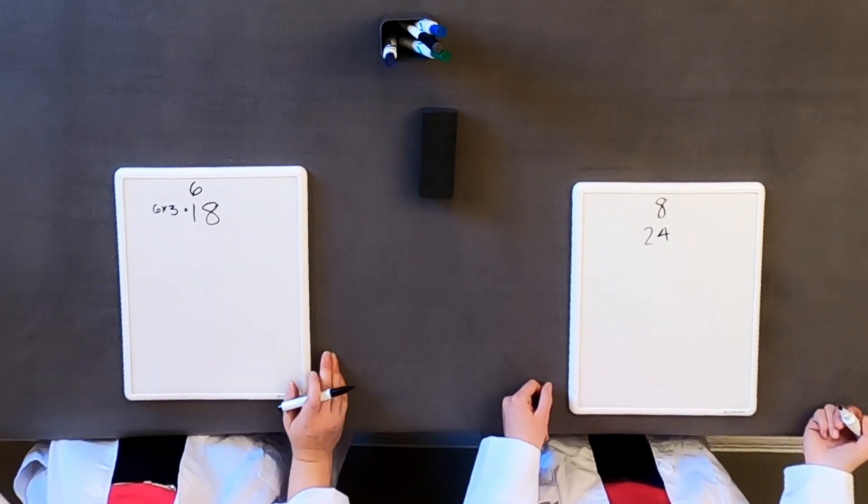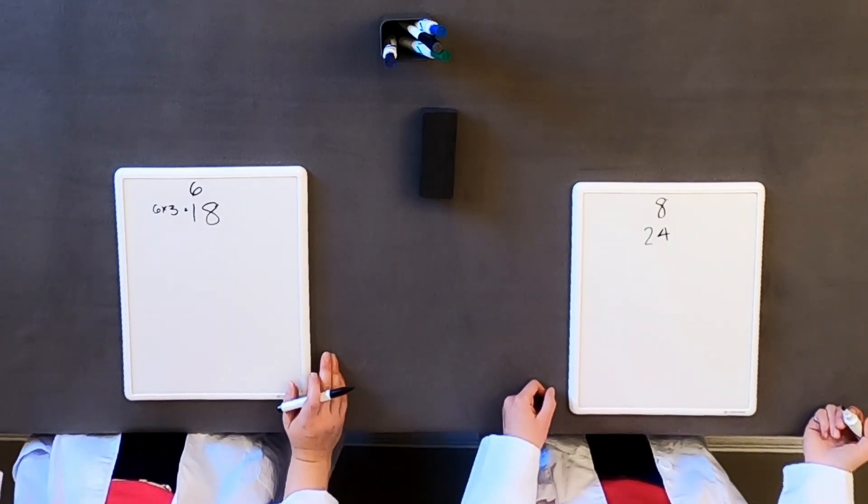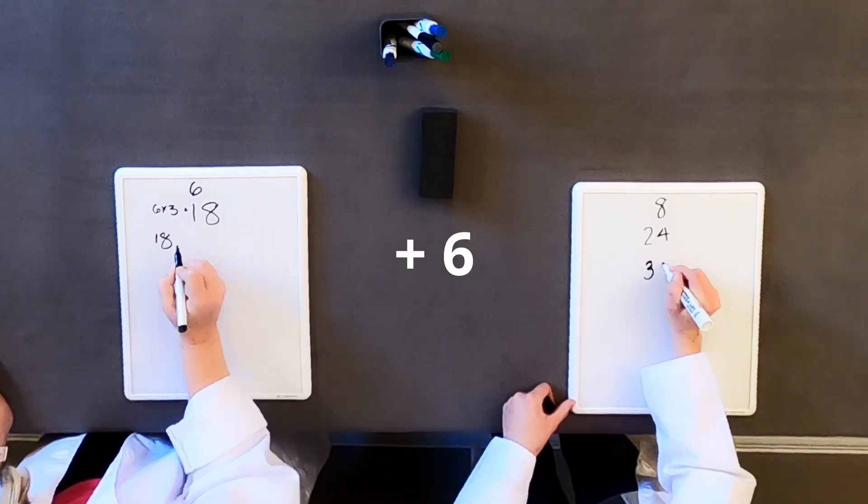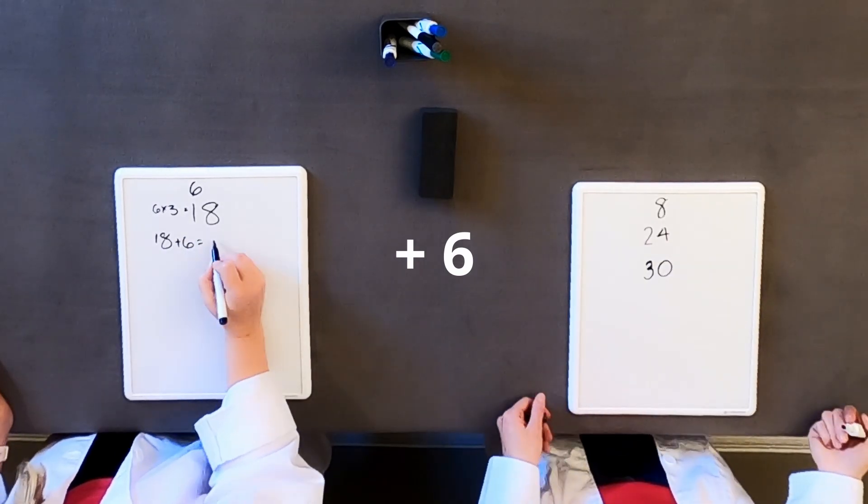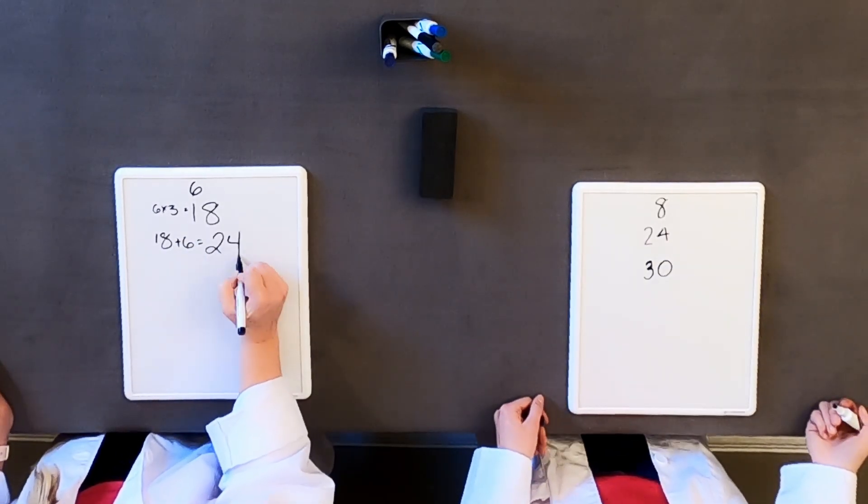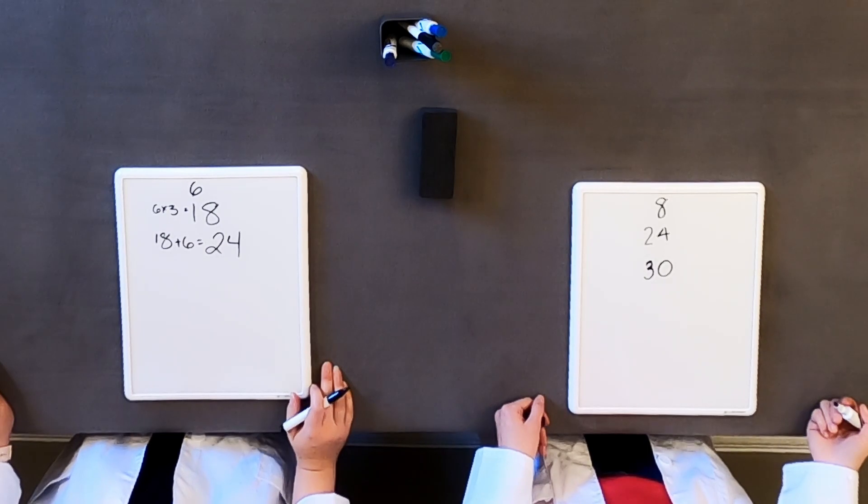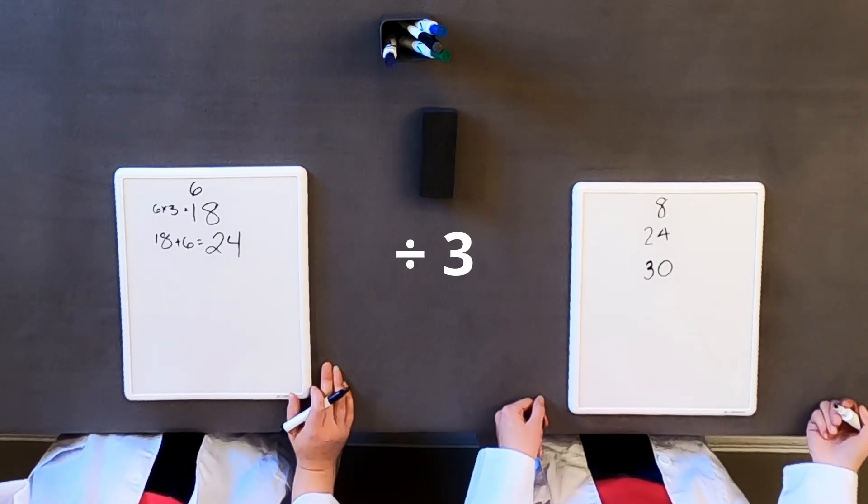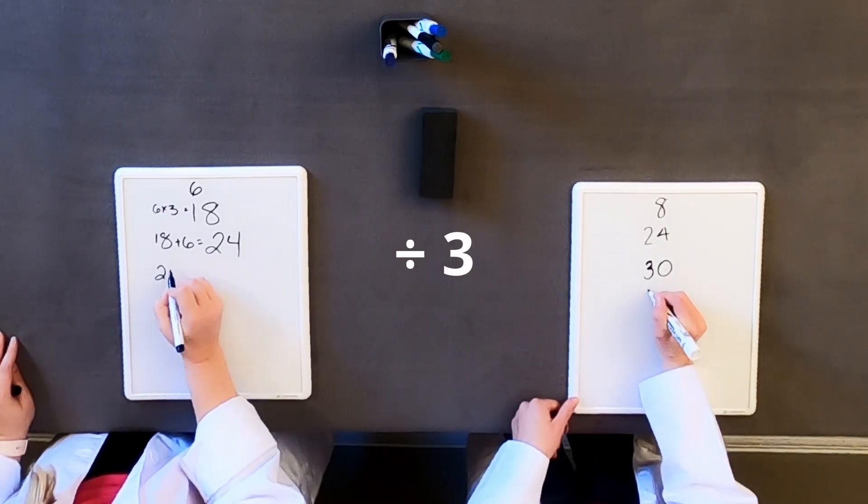Okay, so after that, we're going to take that number and we're going to add 6. Okay, that should make 30 for me. What are you getting? I'm getting 24. Okay, so now that we've got that number, we're going to take that number and we're going to divide it by 3. Oh, that's easy for me. I make 10.